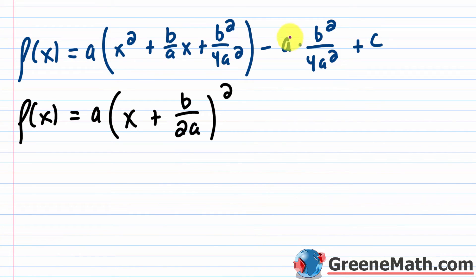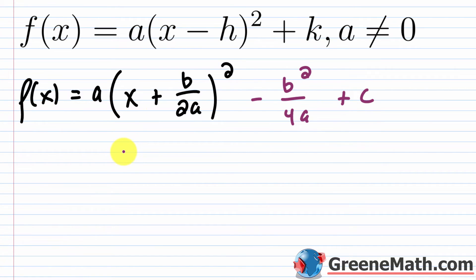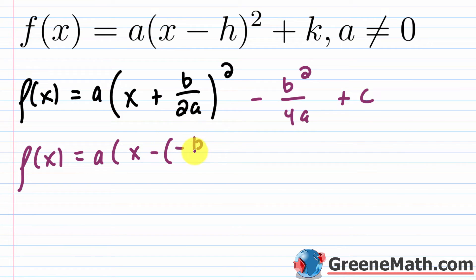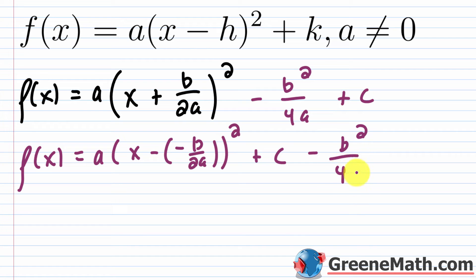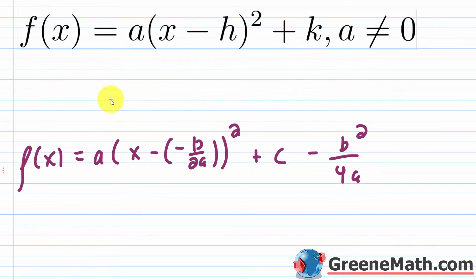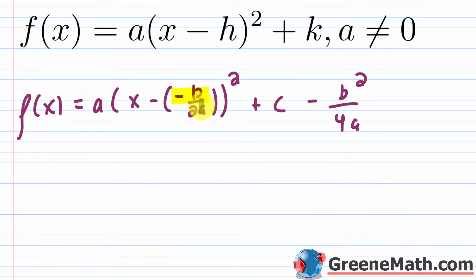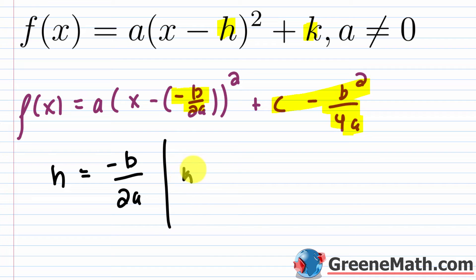Now we cancel one factor of a from a times b squared over 4a squared to get minus b squared over 4a, and then plus c. Rewriting to match vertex form, this becomes f of x equals a times the quantity x minus negative b over 2a, squared, plus c minus b squared over 4a. So we can state that h equals negative b over 2a, and k equals c minus b squared over 4a. You can also just find k as f of h.